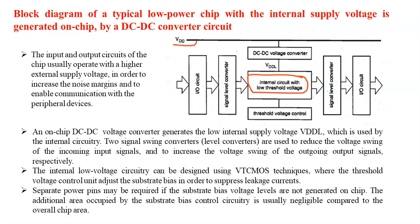The reduced supply voltage is applicable for the input-output circuit, and a signal level converter is also added. This is the main application for VTCMOS — it is mainly used for low VDD as well as low VT applications.